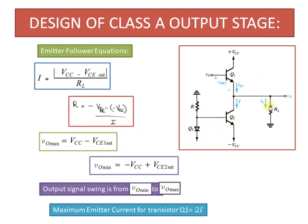To compute the output voltage, we have two output voltages. The maximum output voltage is obtained when transistor Q1 is operating, and that will be VCC minus VCE saturation, whereas the minimum output voltage will be minus VCC plus VCE2 saturation when transistor Q2 is operating. So the maximum output signal swing is from Vout minimum to Vout maximum, as also seen in the transfer characteristics. The maximum emitter current for transistor Q1 will be equal to 2 times I.